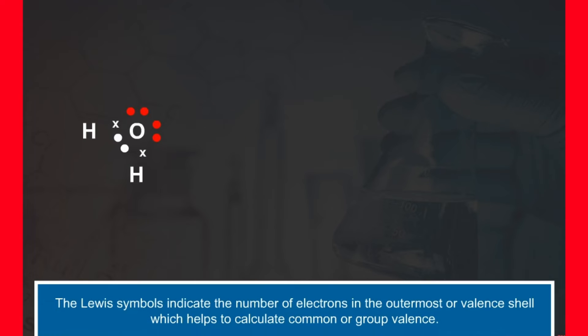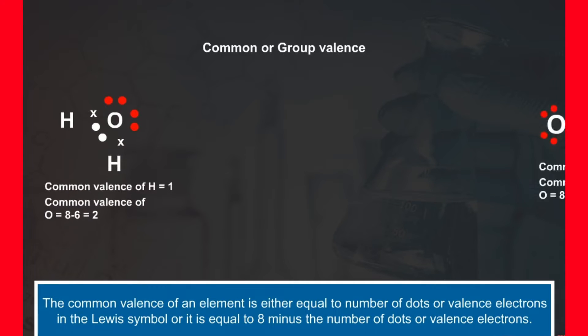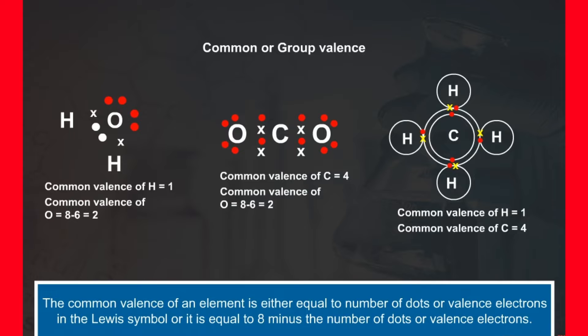The Lewis symbols indicate the number of electrons in the outermost or valence shell which help to calculate common or group valence. The common valence of an element is either equal to number of dots of valence electrons in the Lewis symbol, or it is equal to 8 minus the number of dots of valence electrons.